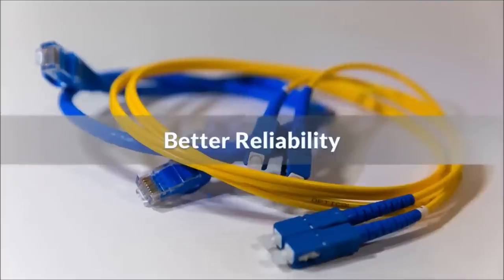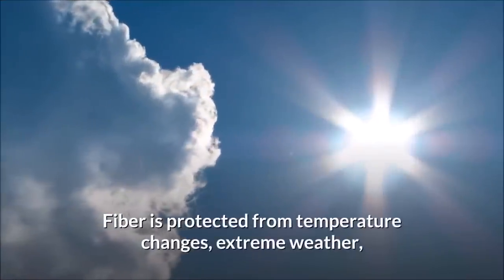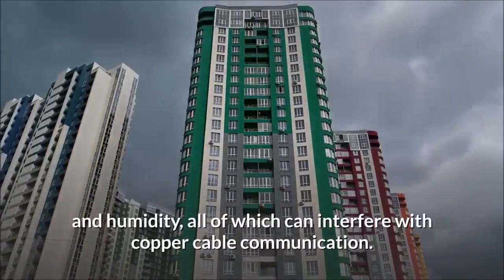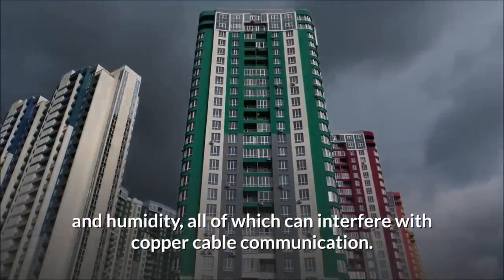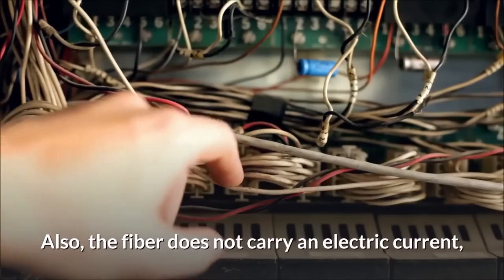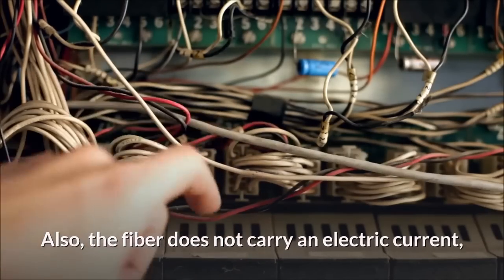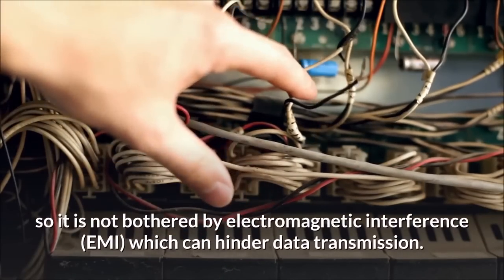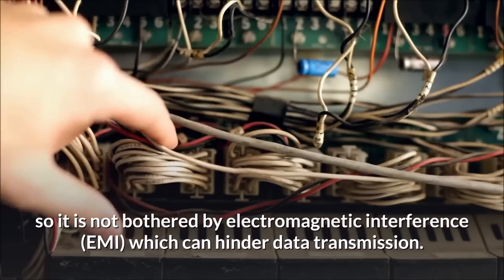Better reliability. Fiber is protected from temperature changes, extreme weather, and humidity, all of which can interfere with copper cable communication. Also, the fiber does not carry an electric current, so it is not bothered by electromagnetic interference which can hinder data transmission.